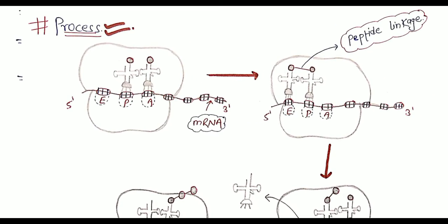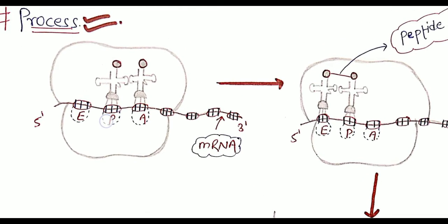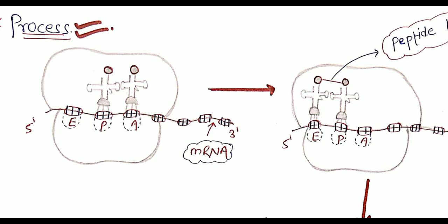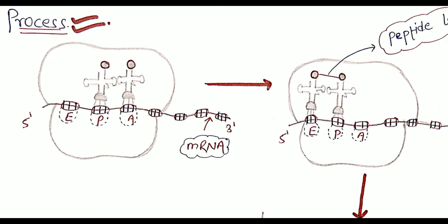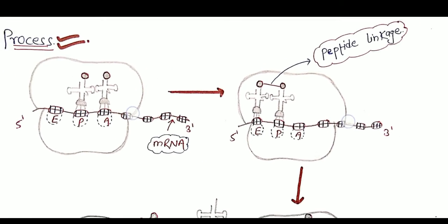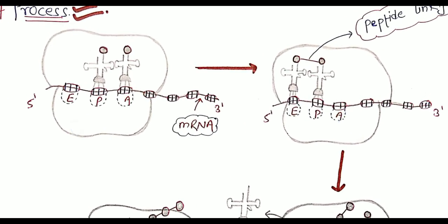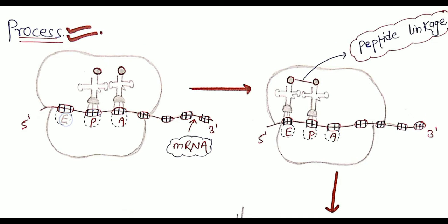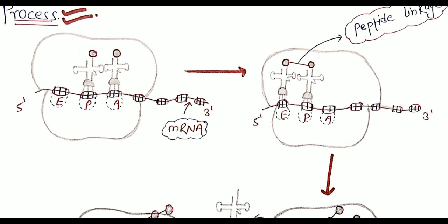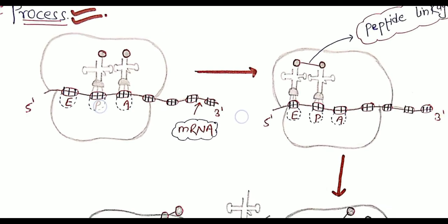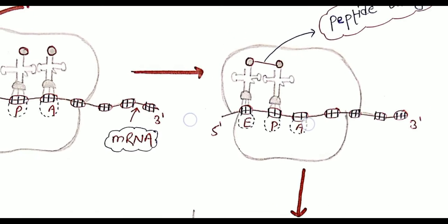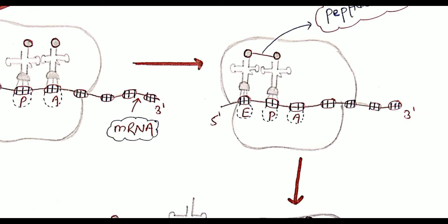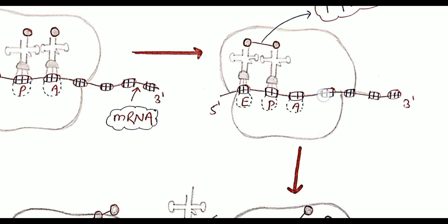The first aminoacyl-tRNA always binds to the P site and the second one binds to the A site. Later, the tRNA from the P site shifts towards the E site, and the tRNA from the A site is shifted to the P site.